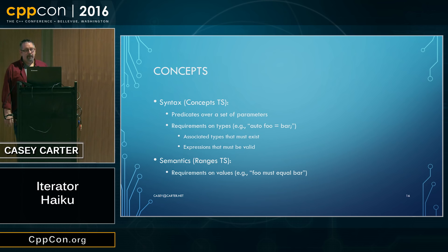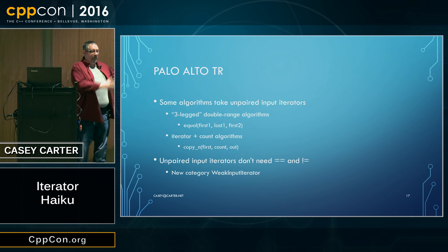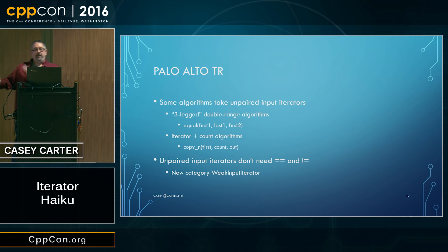The Palo Alto TR authors looked through the algorithms and developed their concepts by seeing how the algorithms used iterators. They didn't say, here's every kind of iterator — let's classify them. They said, here's every kind of algorithm — what do these algorithms need? What operations do they use? And they developed the concepts from above, from the algorithms.